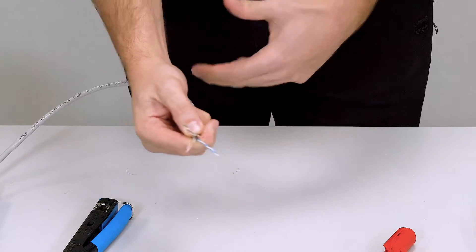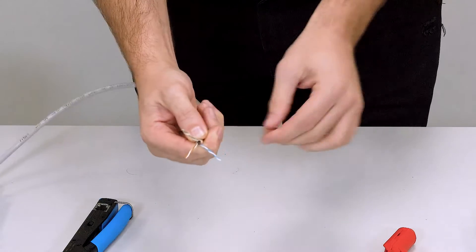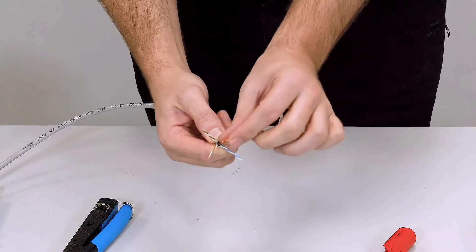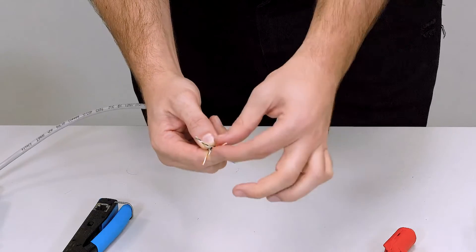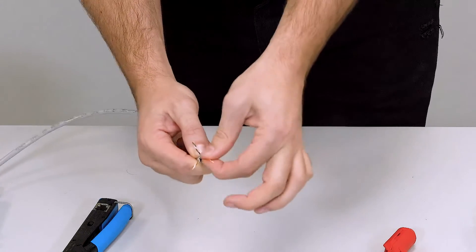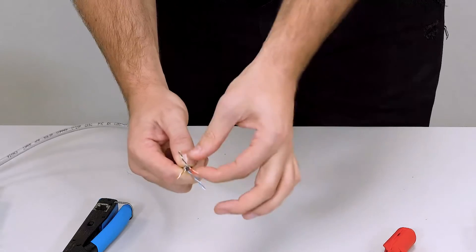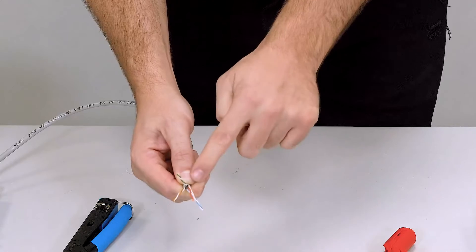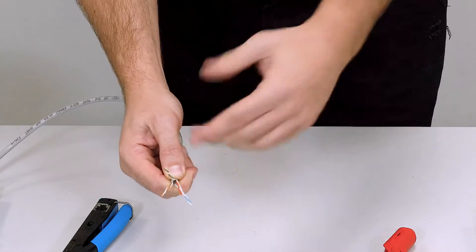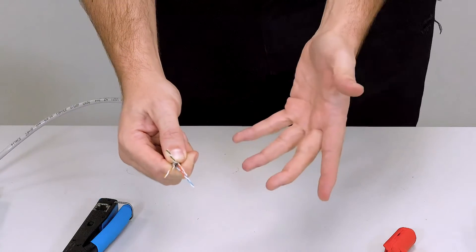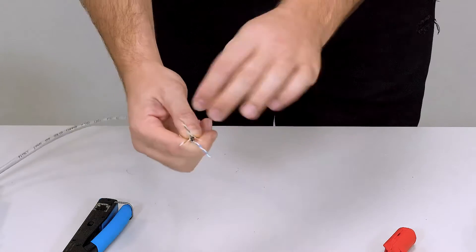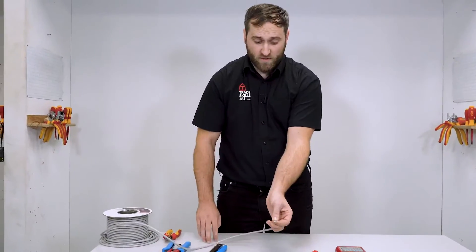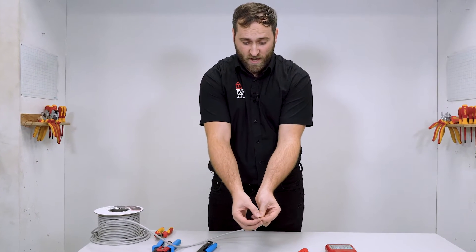What I want to make sure is that I'm keeping the twist as close as I can to this outer sheathing. I don't want to untwist more than I have to. As you can see, I'm just going to untwist those. I'm going to start with the orange and I'm going to talk about the order in which we put these cables in in a moment. There we go, as you can see, nice and flat, untwisted but not too much. I'm going to do that for each individual core.